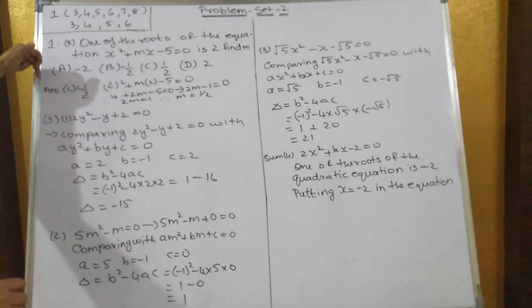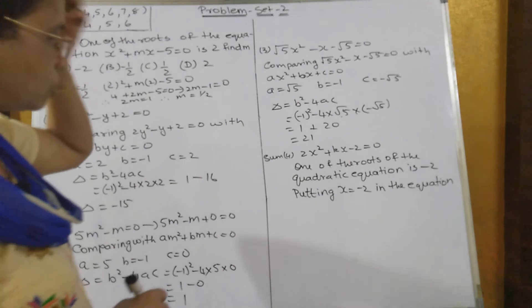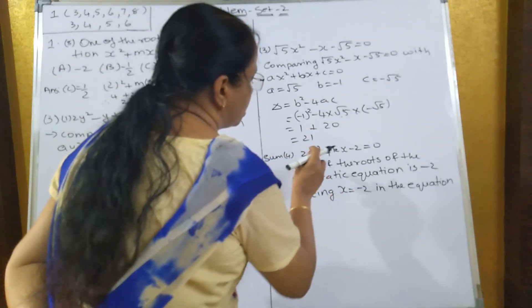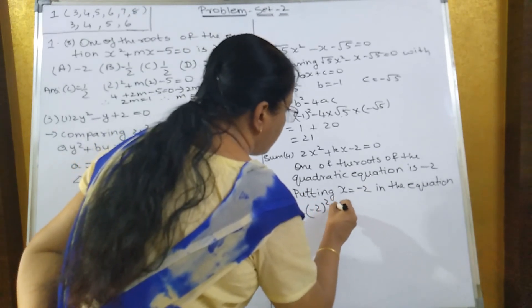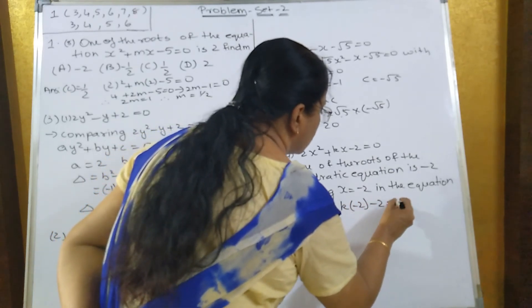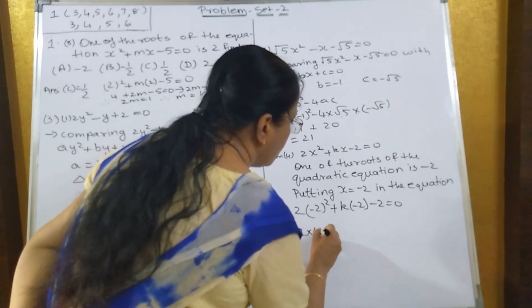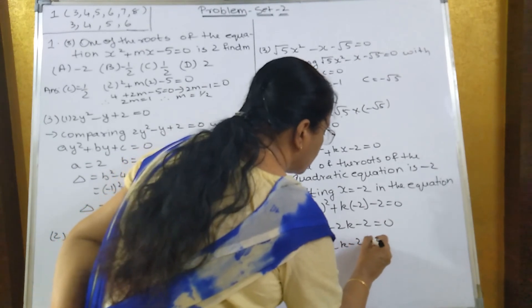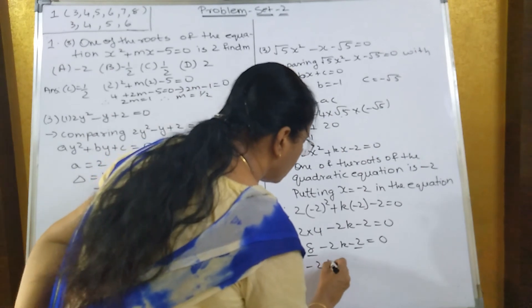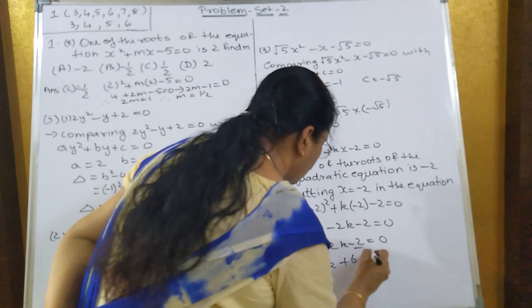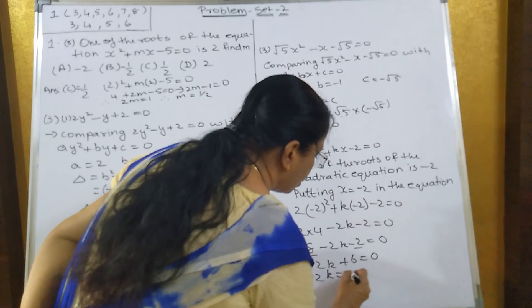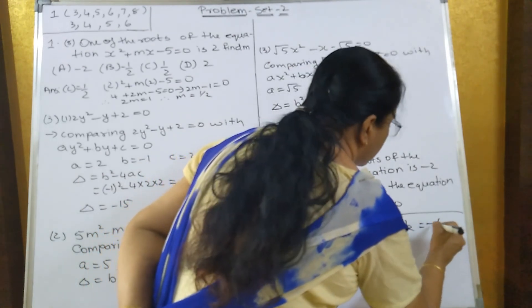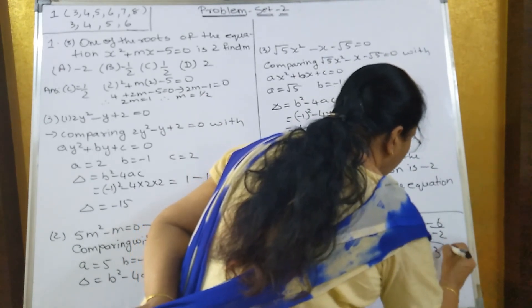Now sum number 4. The equation is 2x² + kx - 2 = 0, and one of the roots is -2. Put x = -2: 2×(-2)² + k×(-2) - 2 = 0. So 2×4 - 2k - 2 = 0. Therefore 8 - 2k - 2 = 0. 8 - 2 gives us -2k + 6 = 0. Take 6 to the other side: -2k = -6. Therefore k = -6 ÷ -2 = 3. The value of k is 3.